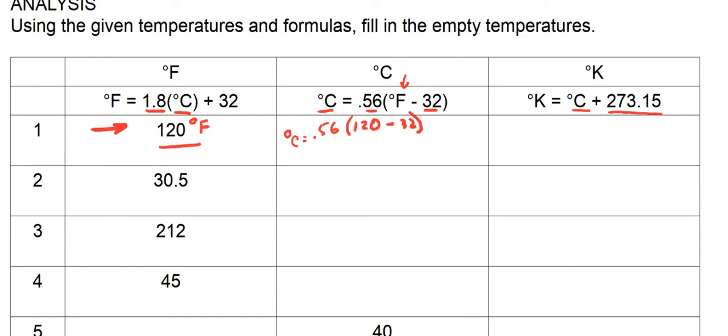Remembering PEMDAS, you do the parentheses first. So that's 120 minus 32, which is 88. Then you take 0.56 times 88, which equals 49.28 degrees Centigrade.